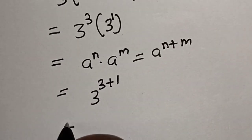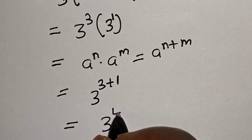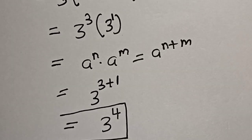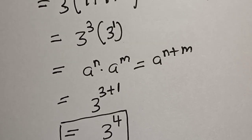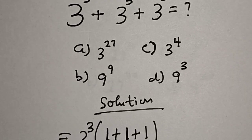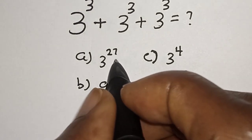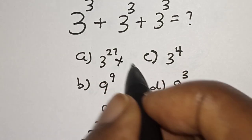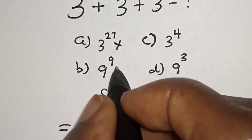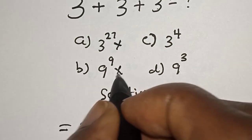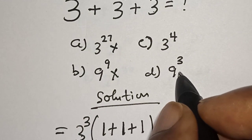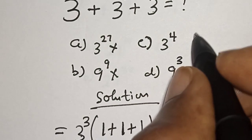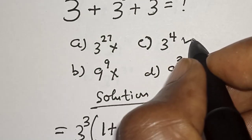This equals 3 raised to power 4, and that is our final answer. Checking the options: A) 3 raised to power 27 — no. B) 9 raised to power 9 — no. D) 9 raised to power 3 — no. C) 3 raised to power 4 — yes! That is the only correct option.